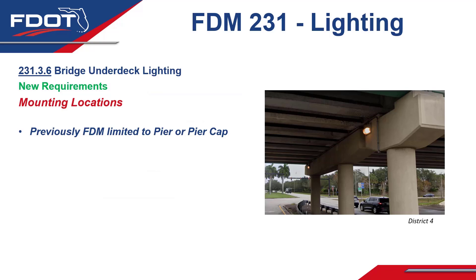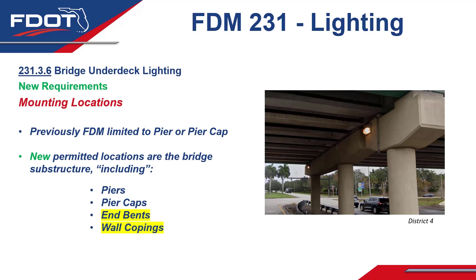Next, moving on to Section 231.3.6 for bridge underdeck lighting, additional options have been added for mounting locations. Previously, the FDM limited mounting of luminaires to the pier or the pier cap. Moving forward, the FDM now says the permitted locations for mounting luminaires are on the bridge substructure, including piers, caps, end vents, and wall coping. A couple more common mounting locations were added as a result of working with the districts on many different projects and seeing what's practical.